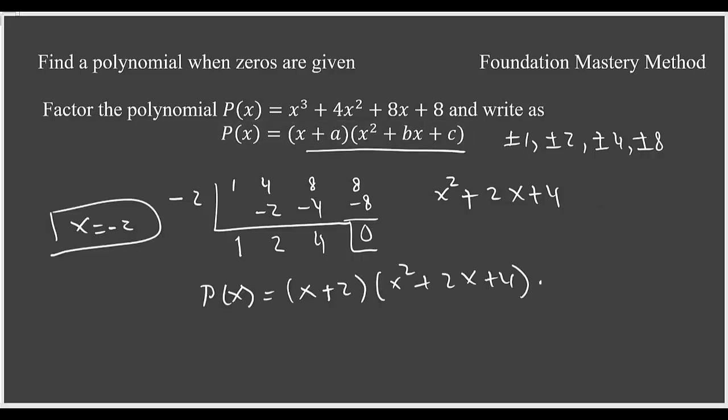To see we have x equals negative 2, that was a zero. So when I write as a factor it will be x plus 2. So when you compare with this you get a equals 2, b equals 2 from here and c equals 4. We are done. Thank you.